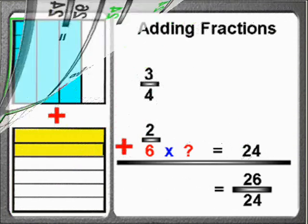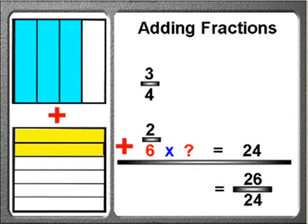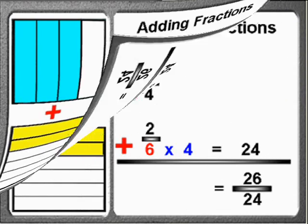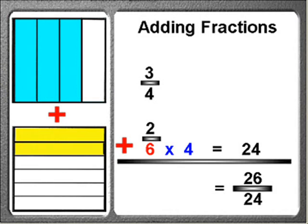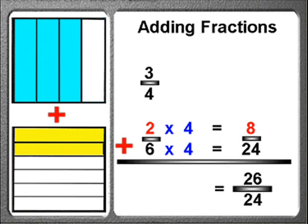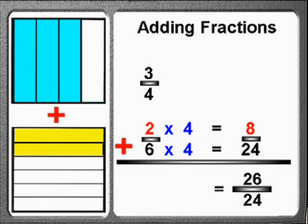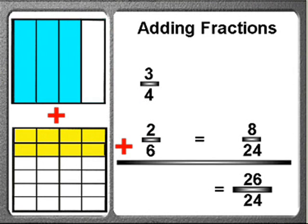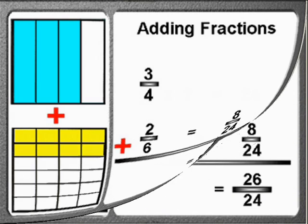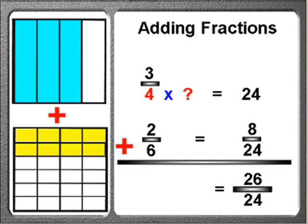Let's start with the bottom number of six for the fraction two-sixths. The number six times what number is equal to twenty-four? Since six times four is equal to twenty-four, multiply that newly found number of four by the fraction's top number of two and you would get the new top number or numerator of eight. What we have just shown is that the fraction two-sixths is really just equal to or equivalent to the fraction eight-twenty-fourths.